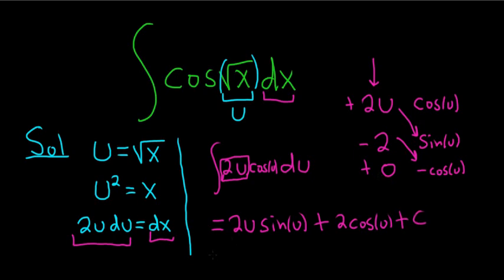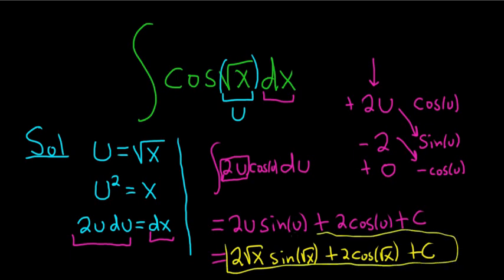The last thing to do is replace all of the u's with square roots, right? Because u is the square root of x. So this is 2 square root of x sine of the square root of x plus 2 cosine of the square root of x plus c. And that is the final answer.